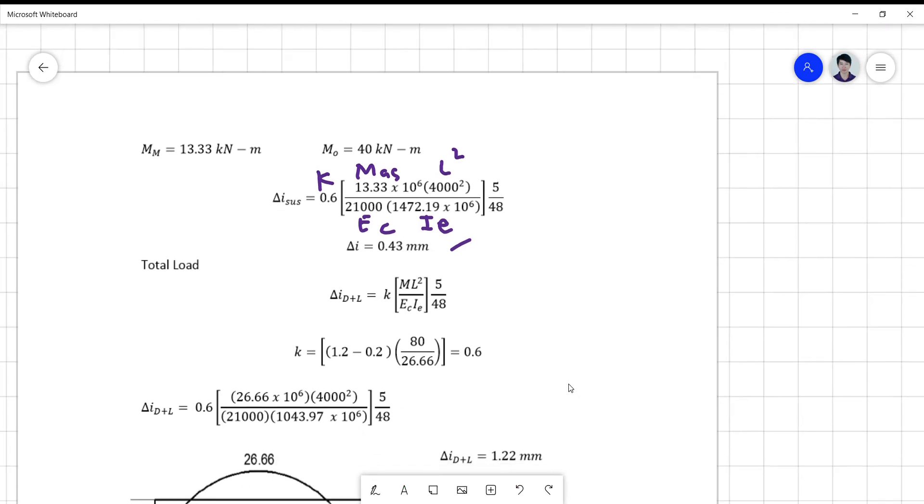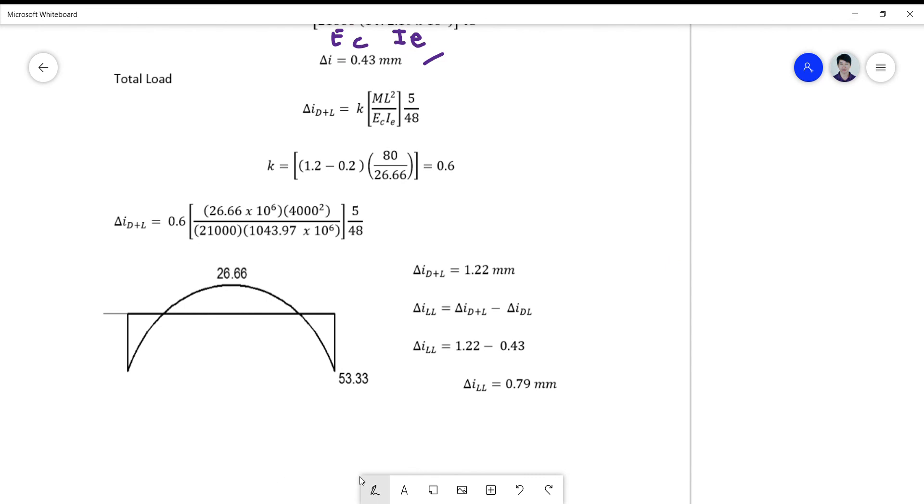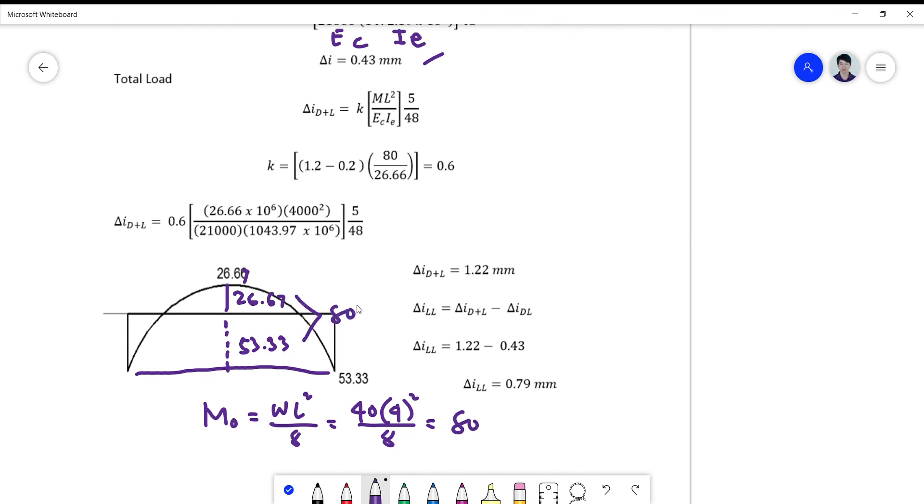And for your total load, the same procedure. You get K on the basis of your MM. MM is 26.67 or 66, and then your average here is 53.33. If I add these two, I get 80. So my Mo is WL squared over 8, which is 40 times 4 squared over 8. This is now 80. And if I add these two here, this is also 80, so check. So I have 80 divided by MM is 26, I get 0.6. Again, the parenthesis is wrong, so that must be 1 minus 0.2 of this one.